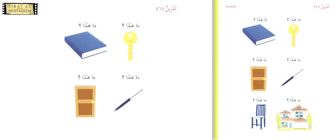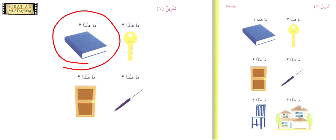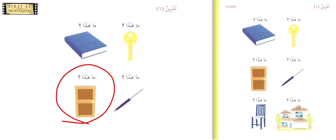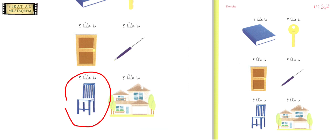Now we quickly cover 'tamreen' — tamreen means exercise. Notice in the exercises there are no damma, fatha, or kasra markings — no pesh, zabar, or zeer. Damma means pesh, fatha means zabar, kasra means zeer in Arabic. So 'ma haza?' — what is this? Answer: 'haza miftahun.' Next: 'ma haza? haza kitabun.' Next: 'haza qalamun.' 'Ma haza? haza baabun.' 'Haza baytun.' 'Haza kursiyyun.'